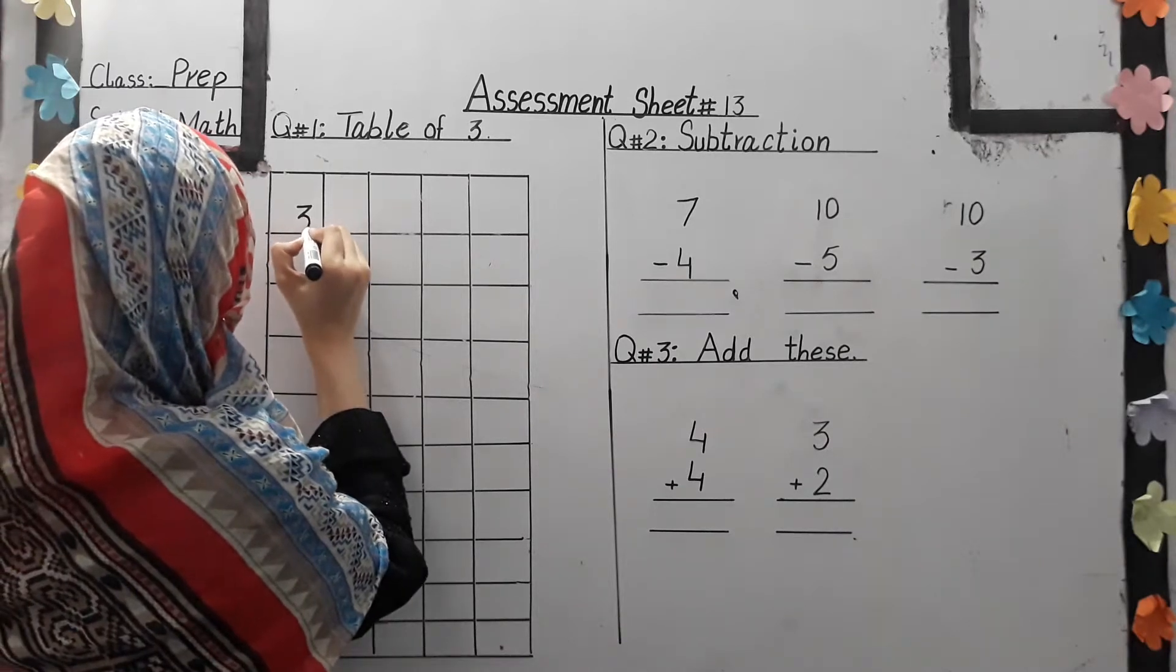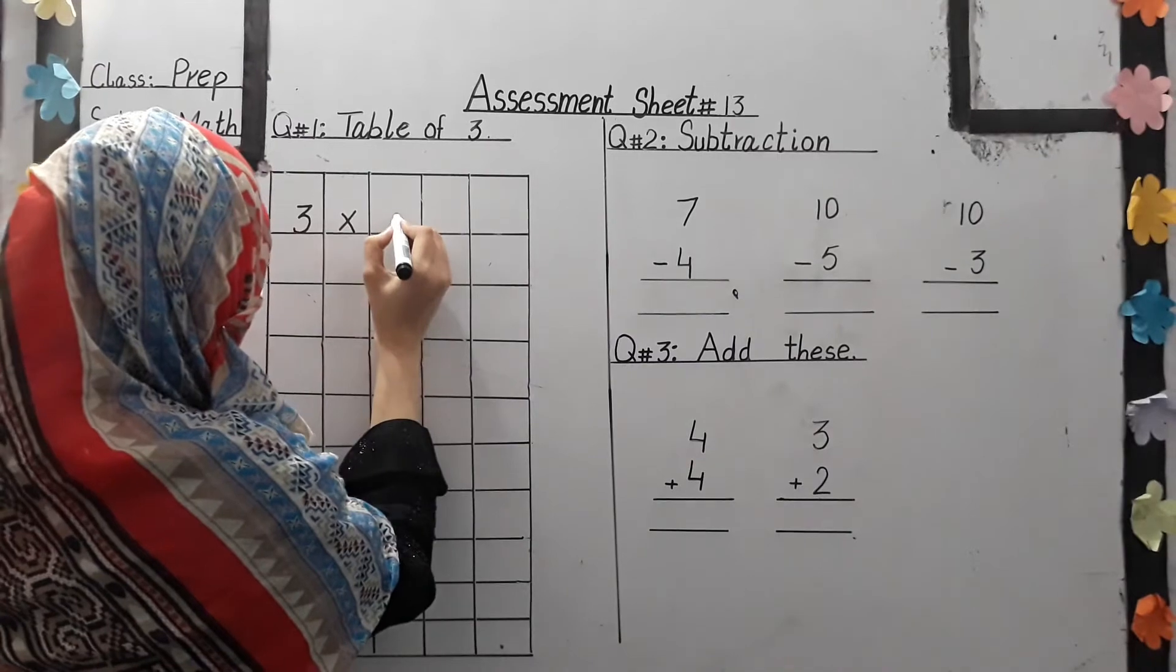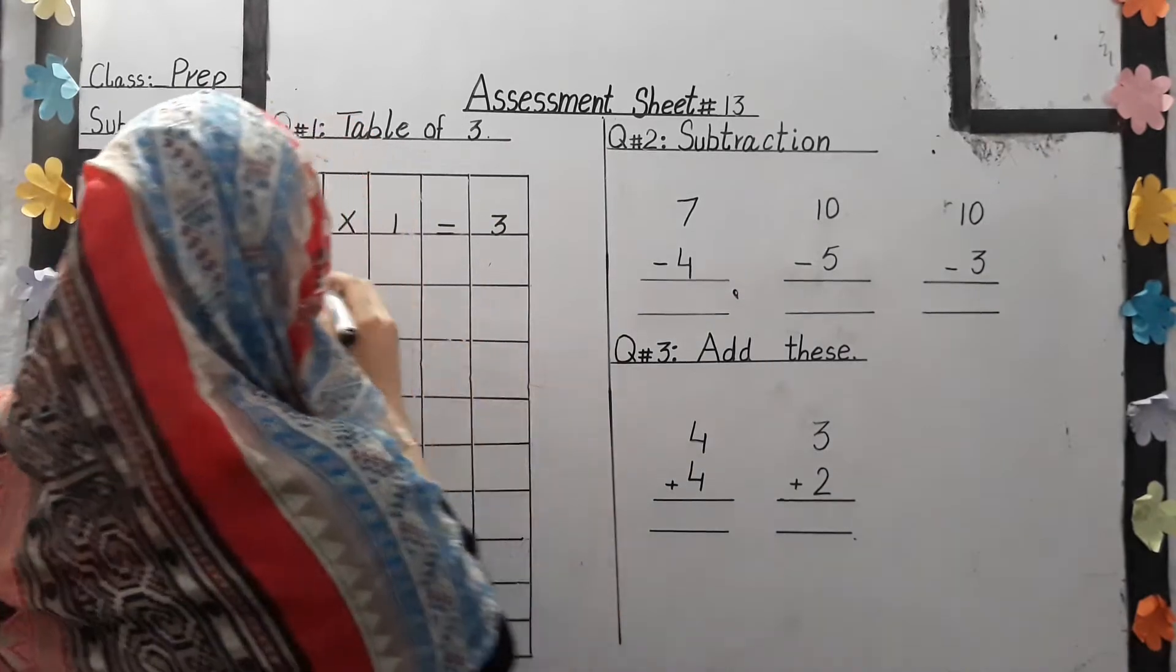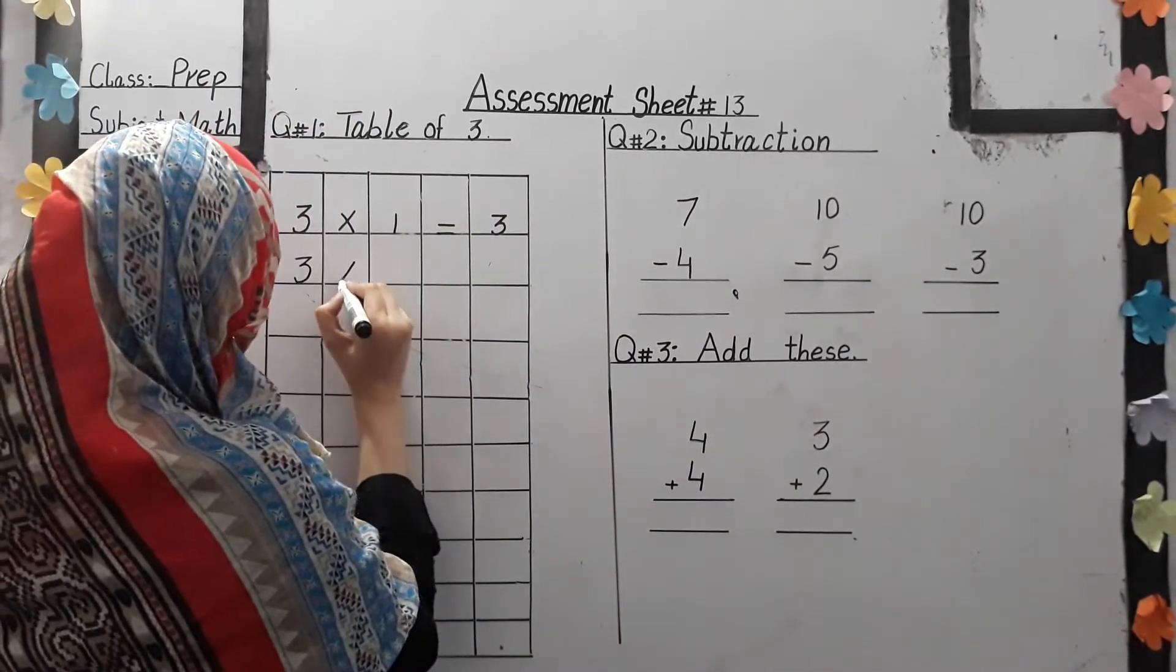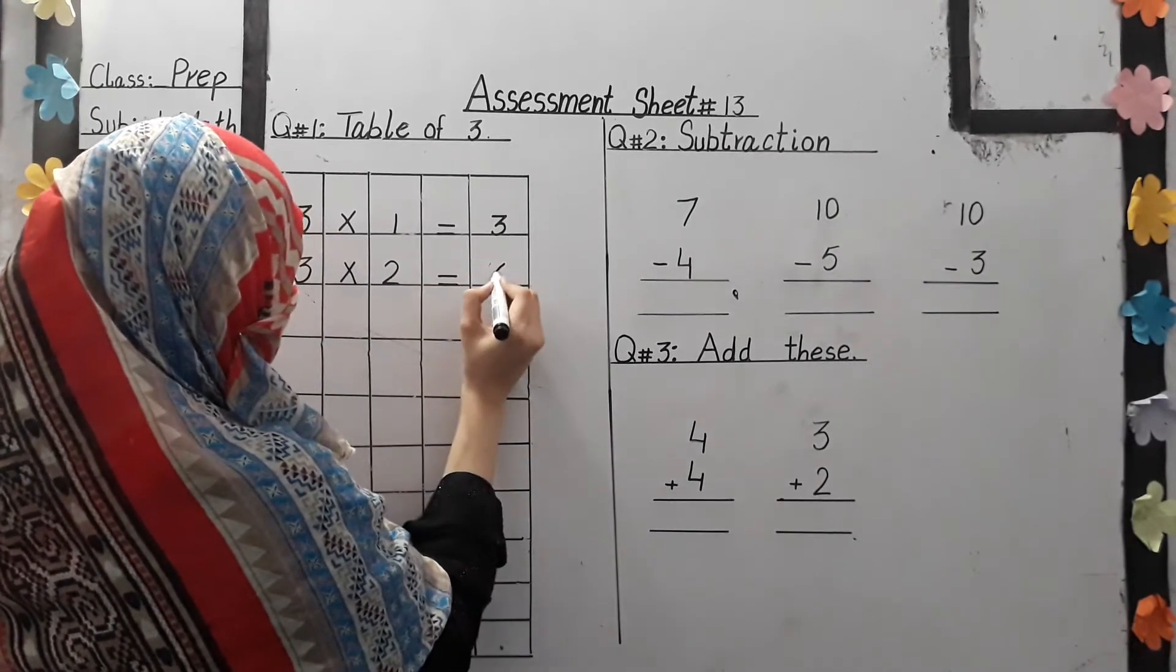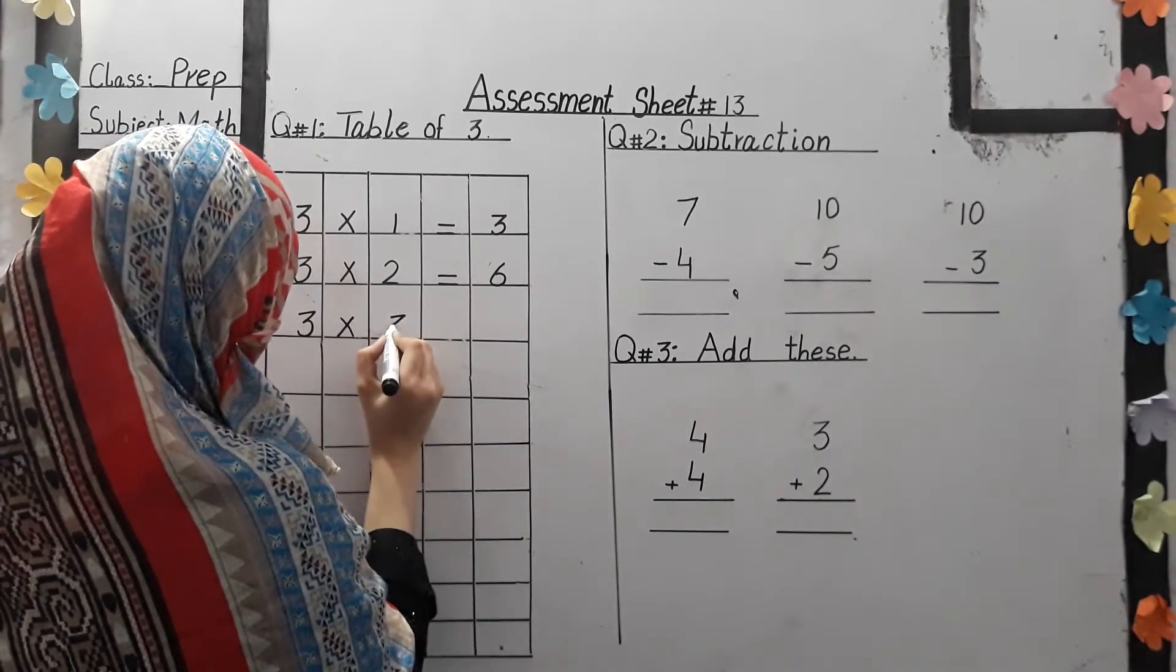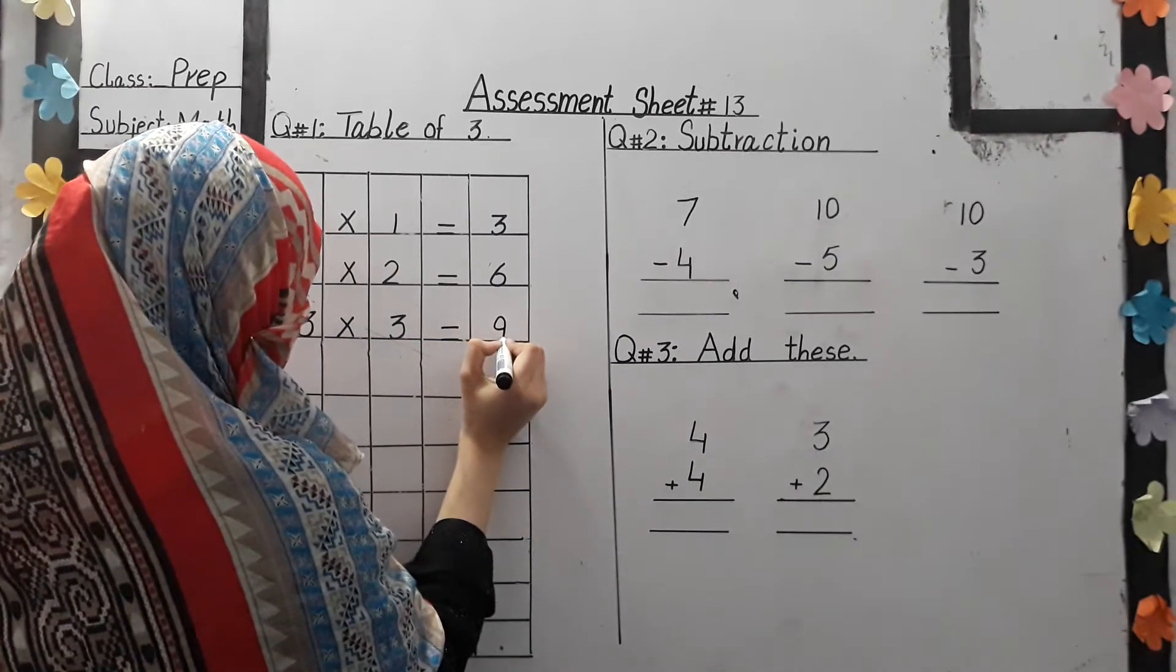The first line of table of 3: 3 ones are 3. Students read with me, 3 ones are 3. 3 twos are 6. 3 threes are 9.